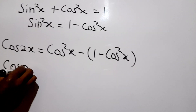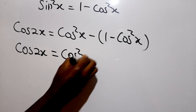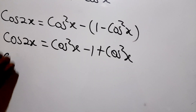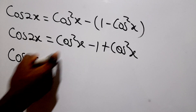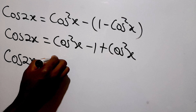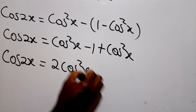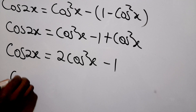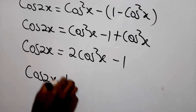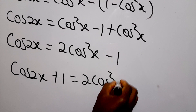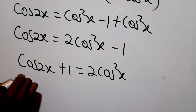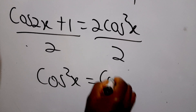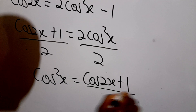So we can say cos 2x is equal to cos squared x plus cos squared x. In making cos squared x the subject, we can say that cos squared x is equal to (cos 2x plus 1) all over 2.